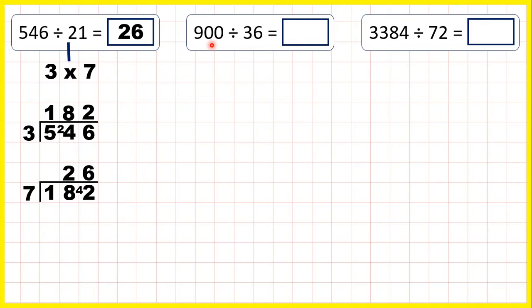Now 900 divided by 36. 36 is 6 times 6, so we can divide 900 by 6, then we're going to take our answer and divide it by 6 again.